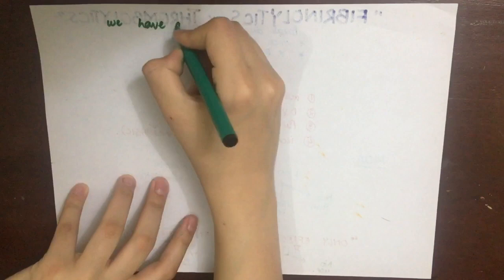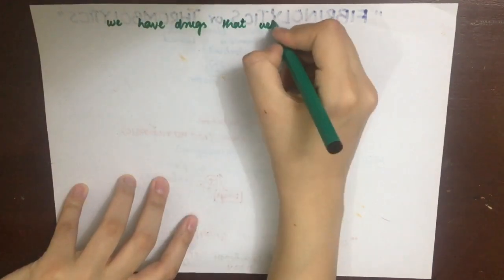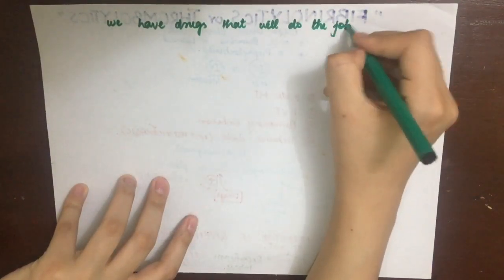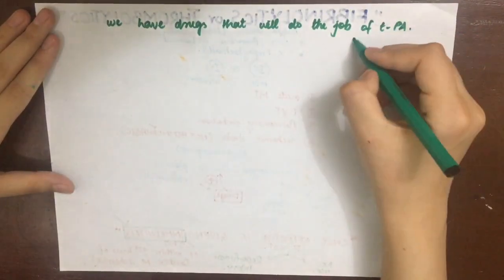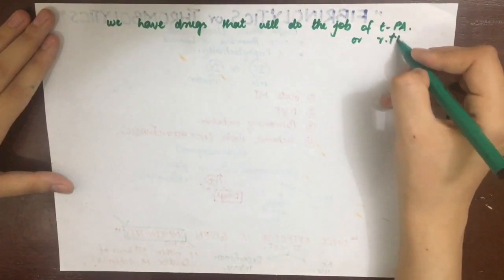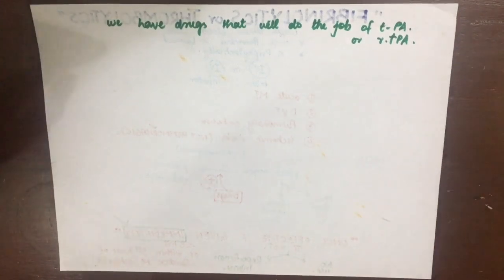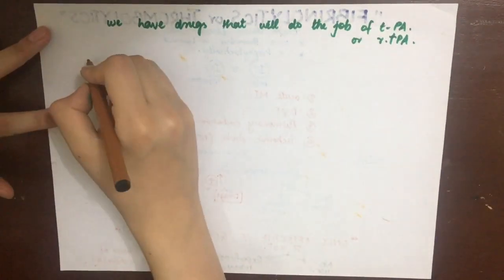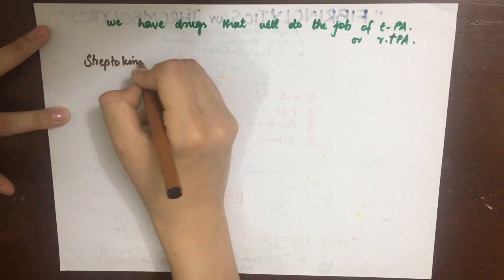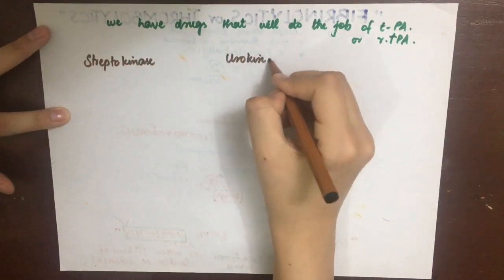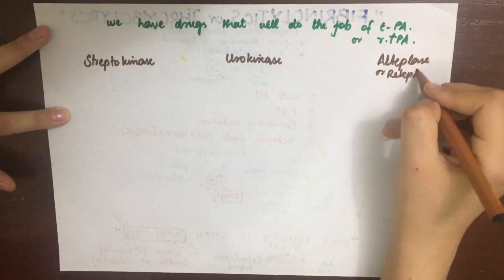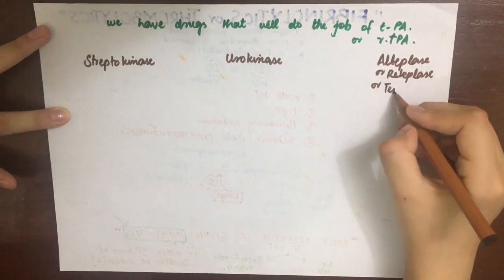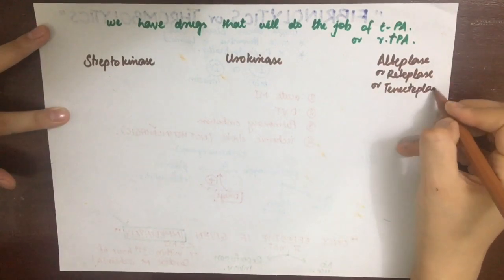The drugs used as fibrinolytics or thrombolytics essentially do the job of tissue plasminogen activator, or we have recombinant forms of tPA, which convert plasminogen into active plasmin to dissolve the clot. We'll discuss three of them: streptokinase, urokinase, and alteplase — with reteplase and tenecteplase belonging to the same family as alteplase.